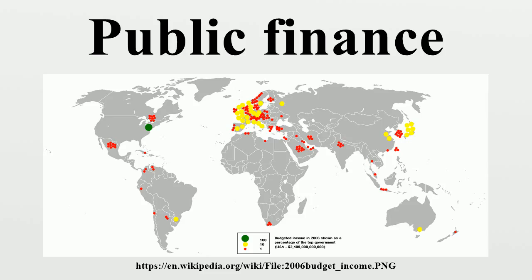Collection of sufficient resources from the economy in an appropriate manner, along with allocating and using these resources efficiently and effectively, constitutes good financial management. Resource generation, resource allocation, and expenditure management are the essential components of a public financial management system. Public finance management basically deals with all aspects of resource mobilization and expenditure management in government, just as managing finances is a critical function of management in any organization. Public finance management includes resource mobilization, prioritization of programs, the budgetary process, efficient management of resources, and exercising controls.